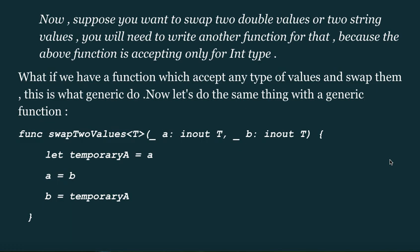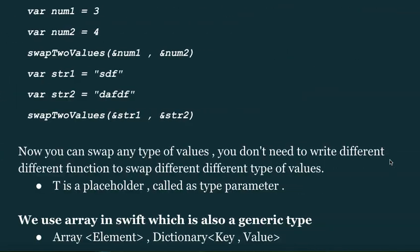Now let's do the same thing with a generic function: `func swapTwoValues<T>(_ a: inout T, _ b: inout T)`. Inside, we use a temporary variable to swap: `let temp = a; a = b; b = temp`. For example, `var num1 = 3` and `var num2 = 4`.